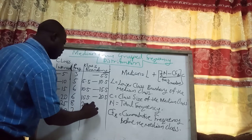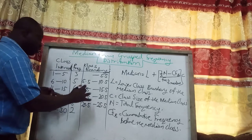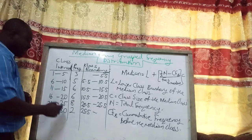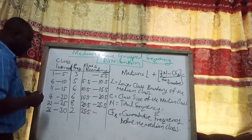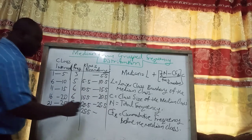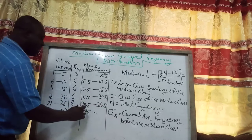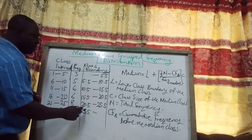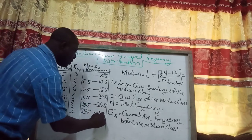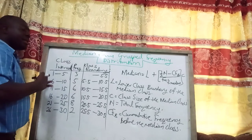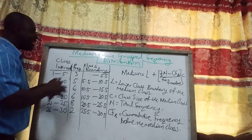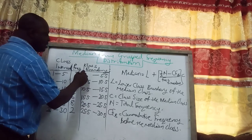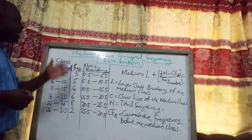The class boundaries continue as 15.5 to 20.5, then 20.5 to 25.5, then 25.5. After 30, the next figure would have been 31, and the interval size is 5 throughout. So adding 5 gives us 30.5 as the upper boundary. For the lower class boundary of the first class, subtracting 5 from 5.5 gives us 0.5. These are the class boundaries.